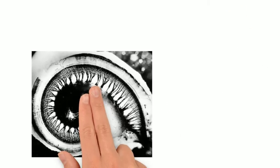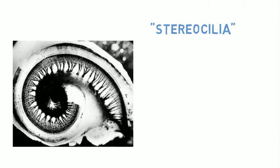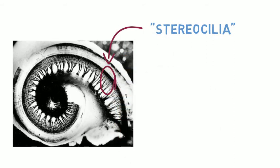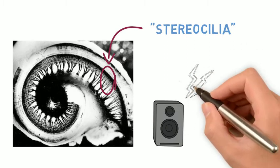The cochlea is a fluid-filled organ lined with microscopic hairs, called stereocilia. These hairs are connected to a nerve network, called the auditory nerve, which turns vibrations into electrical impulses, which the brain can interpret as sound.